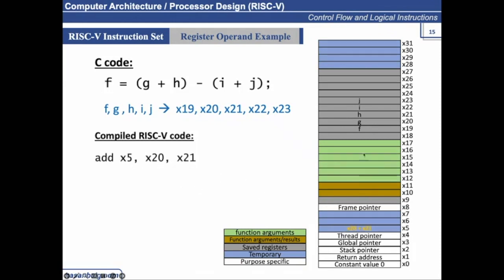So what will happen is, it will go into this register. Whatever the contents stored in X20, it will be grabbed. Similarly, X21, and then the addition is performed, and the results are stored in here.